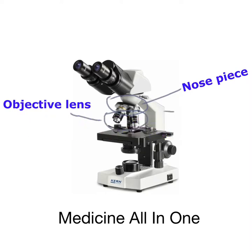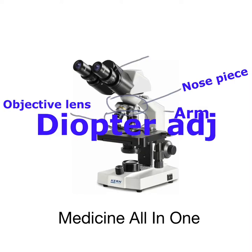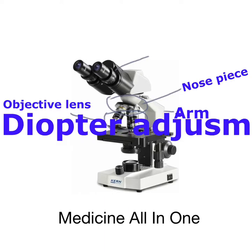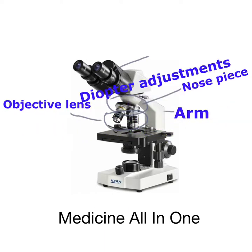The microscope also consists of an arm and a diopter adjustment. The diopter adjustment is basically for adjusting the magnification power of the ocular lens.